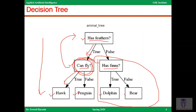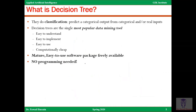All the leaf nodes are the predictions you are making, and all the intermediate nodes are the questions being asked in the decision tree. A decision tree is used for classification — you predict a categorical output from a categorical or real input. For instance, predicting whether an animal is a hawk, a penguin, a dolphin, or a bear — those are four categories in the previous example.